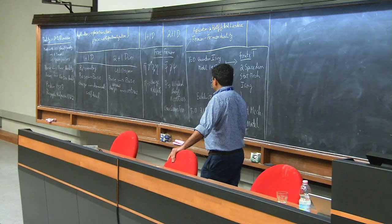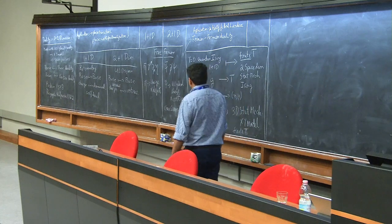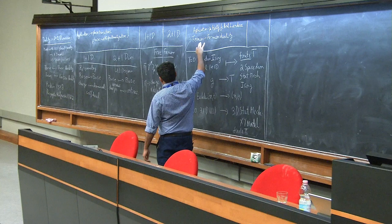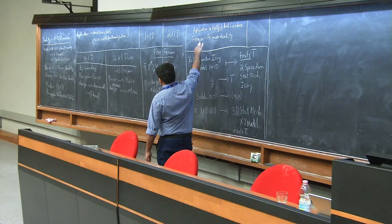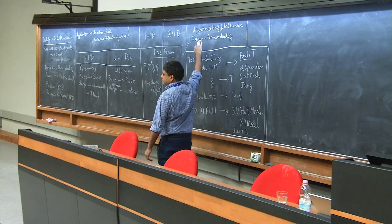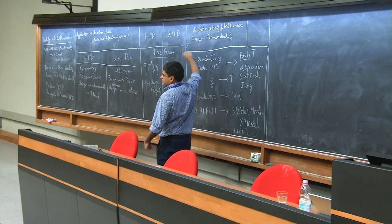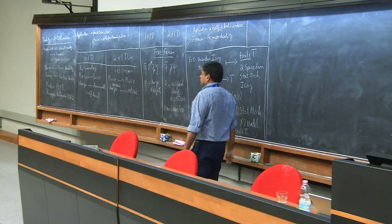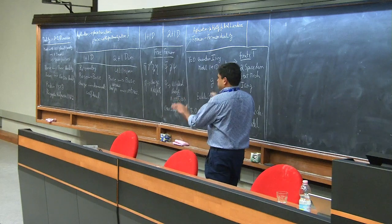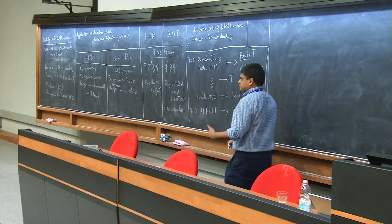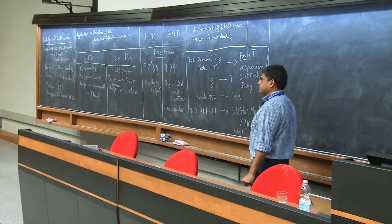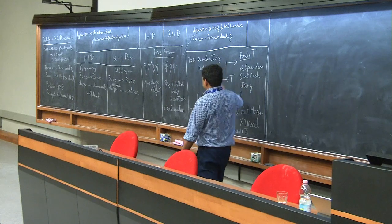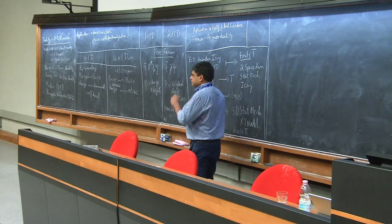Also, once you start talking about the fermion-fermion duality, there are really no stat mech analogs of that once you have fermions on both sides as the physical degrees of freedom — so that's another thing to keep in mind.